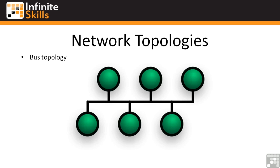The first topology we're going to talk about is the bus topology. The bus topology, on a physical level, is where every network device is connected to the same piece of wire. You have a bus that goes from one end of your network to the other and each device connects to this same physical piece of wire. You may remember ThinX or thick Ethernet with vampire taps, although you won't see those in modern networks.